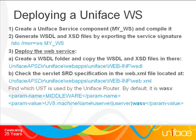Deploying a Uniface web service is very easy. First, you create a Uniface service — a session service, entity service, or even a service with no Uniface implementation, such as COM or C. Then you export the signature of your service by entering /sto /middleware=webservice and the name of the service. This will create a WSDL file and also an XSD file, in case you are using complex data types.